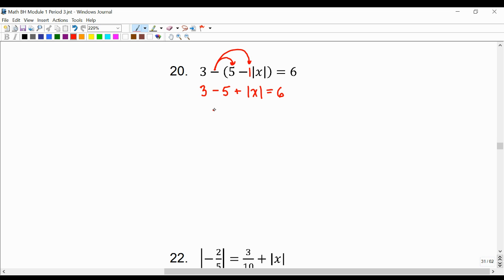Next, we're going to combine like terms: negative 2 plus the absolute value of x equals 6. We'll do our additive inverse, add 2. The bars are still there.